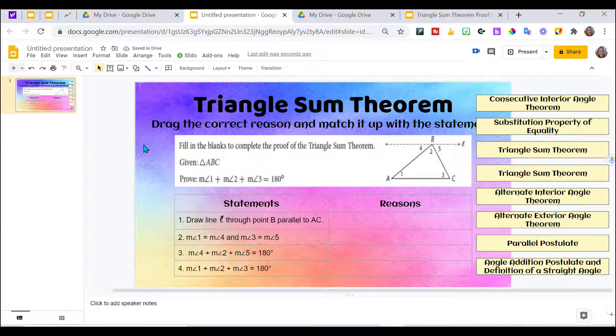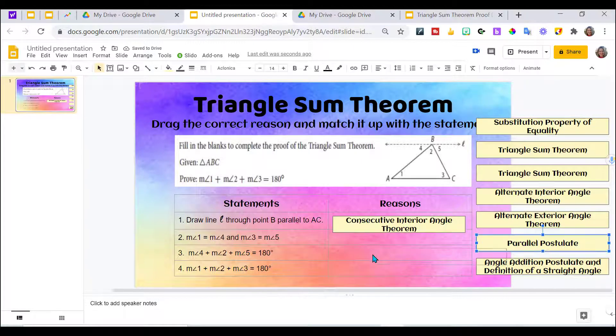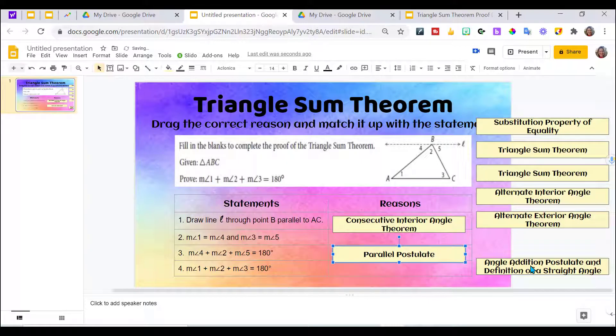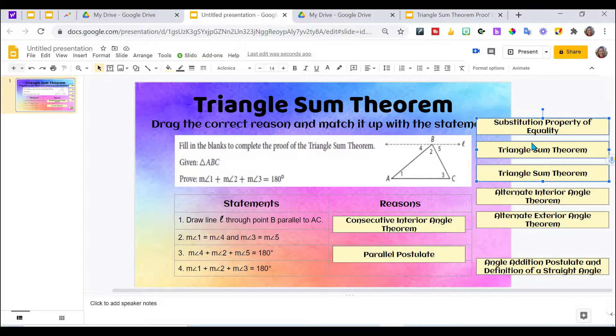And now when you assign this, each student gets their own copy. Students can drag these and place them in the right spot. And you can see immediately if they know what they are doing. Notice none of this in the background can be moved. The only thing that they can move are these cards. So what did you think? Is this something that you could do with your students? Make your slides a little more interactive and a little more engaging? Let me know in the comments what you think.